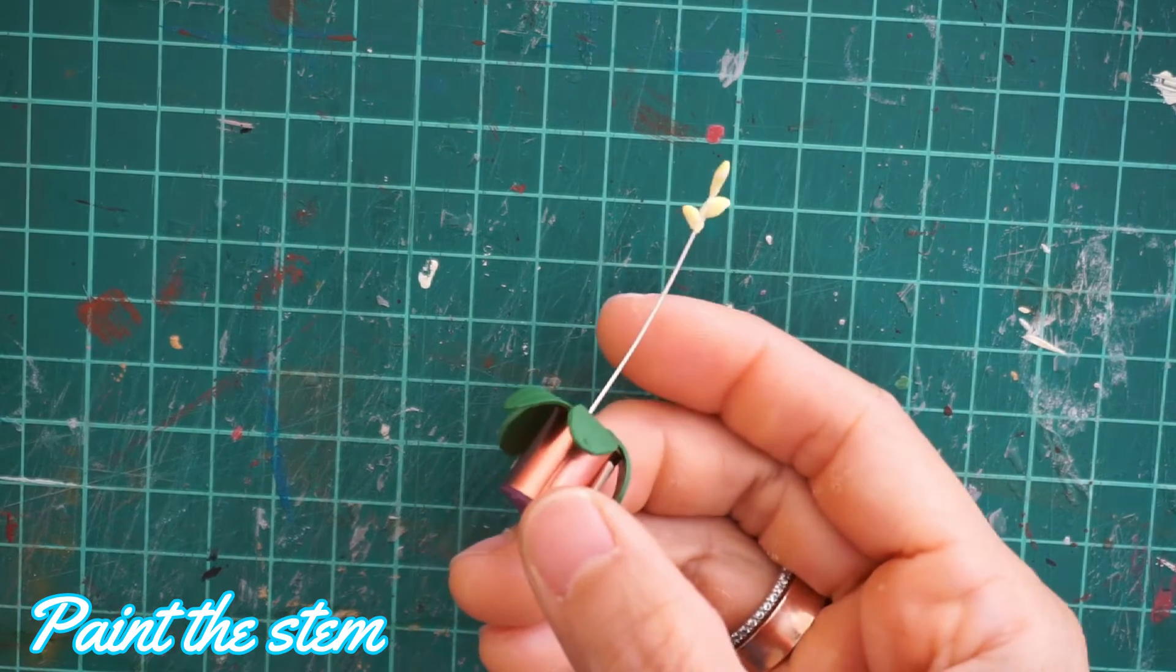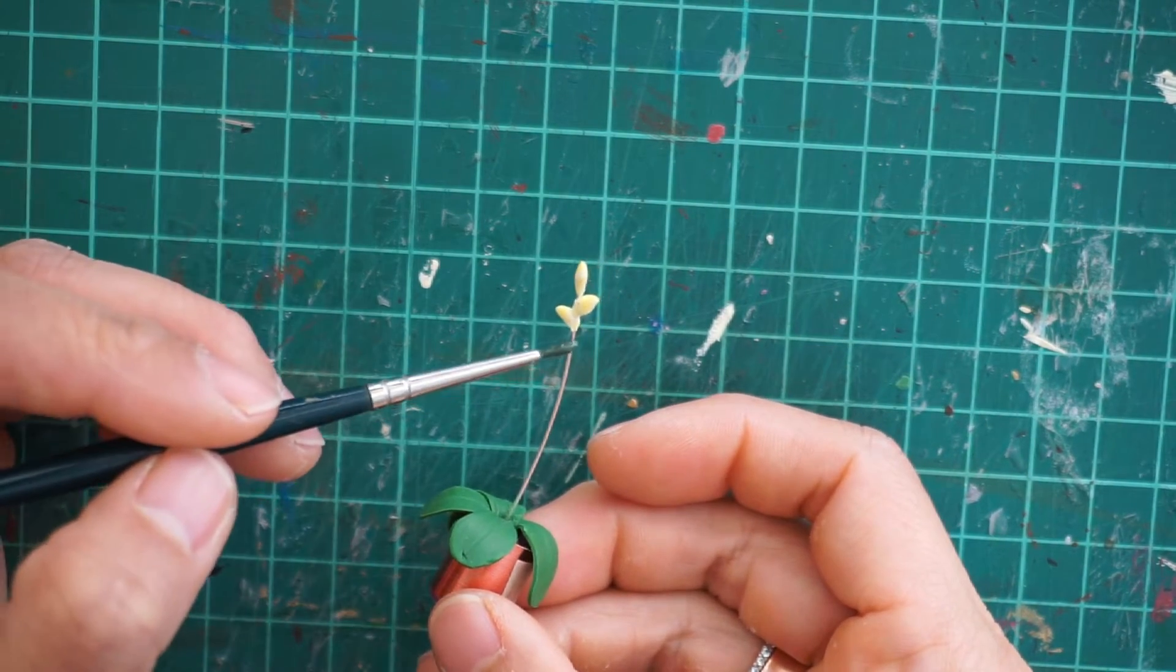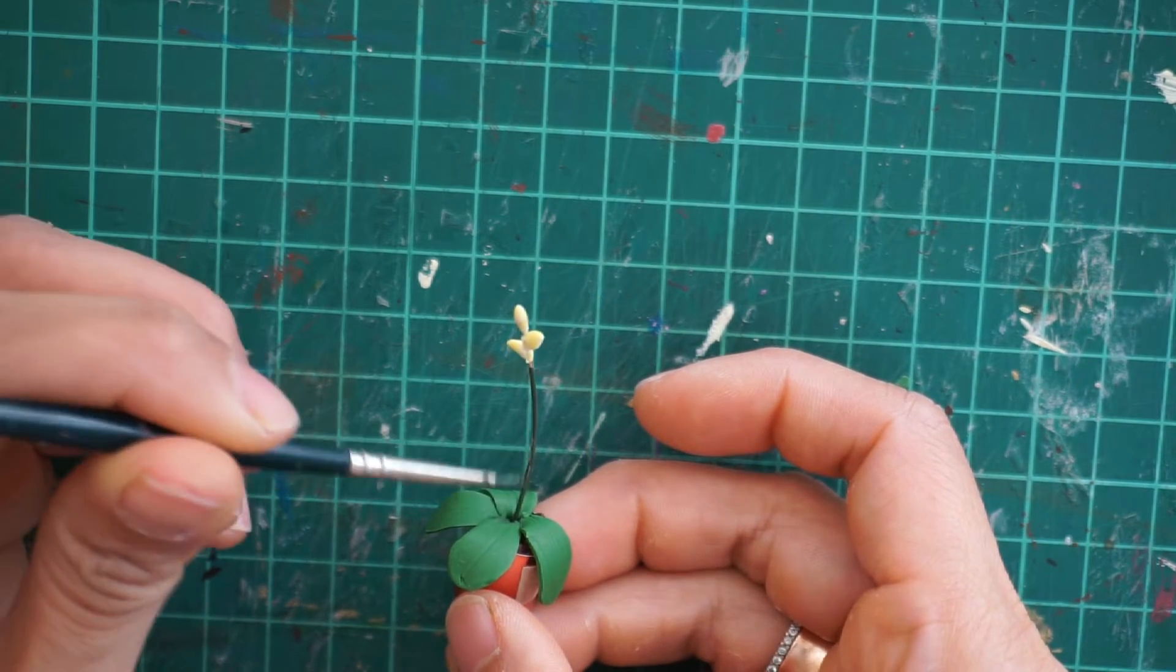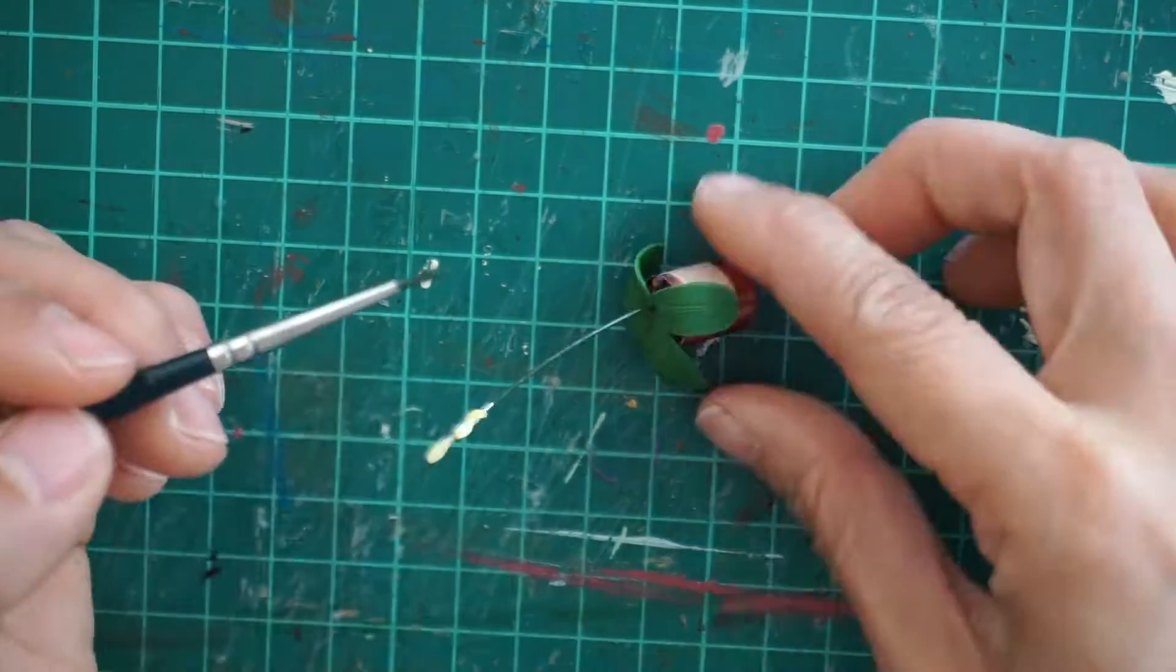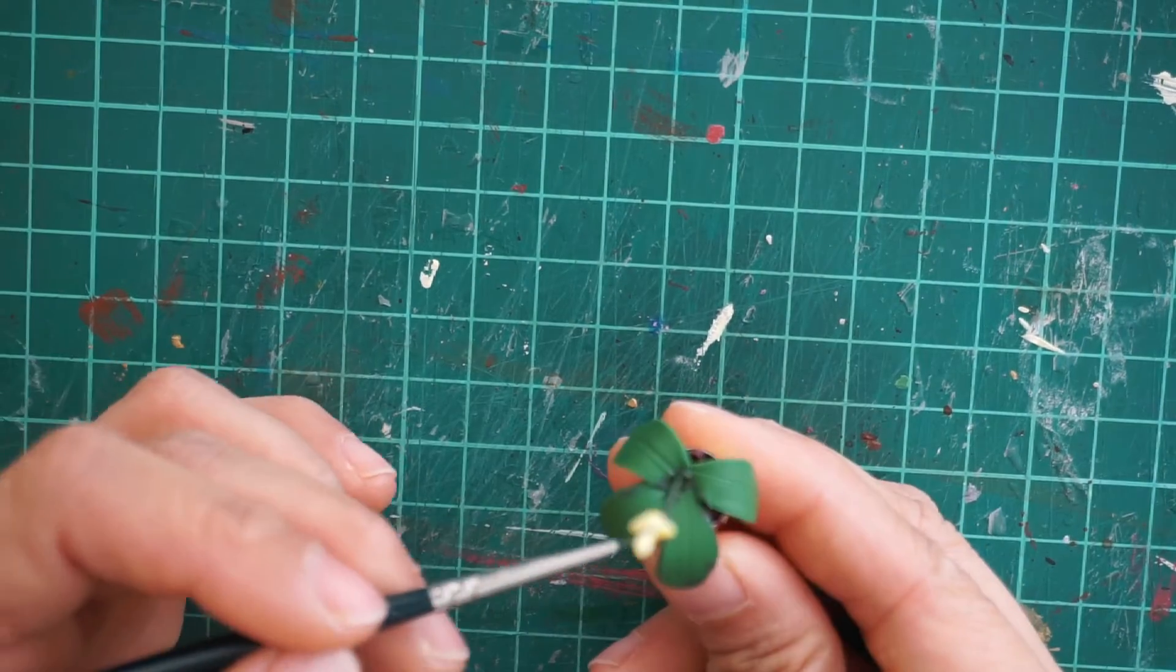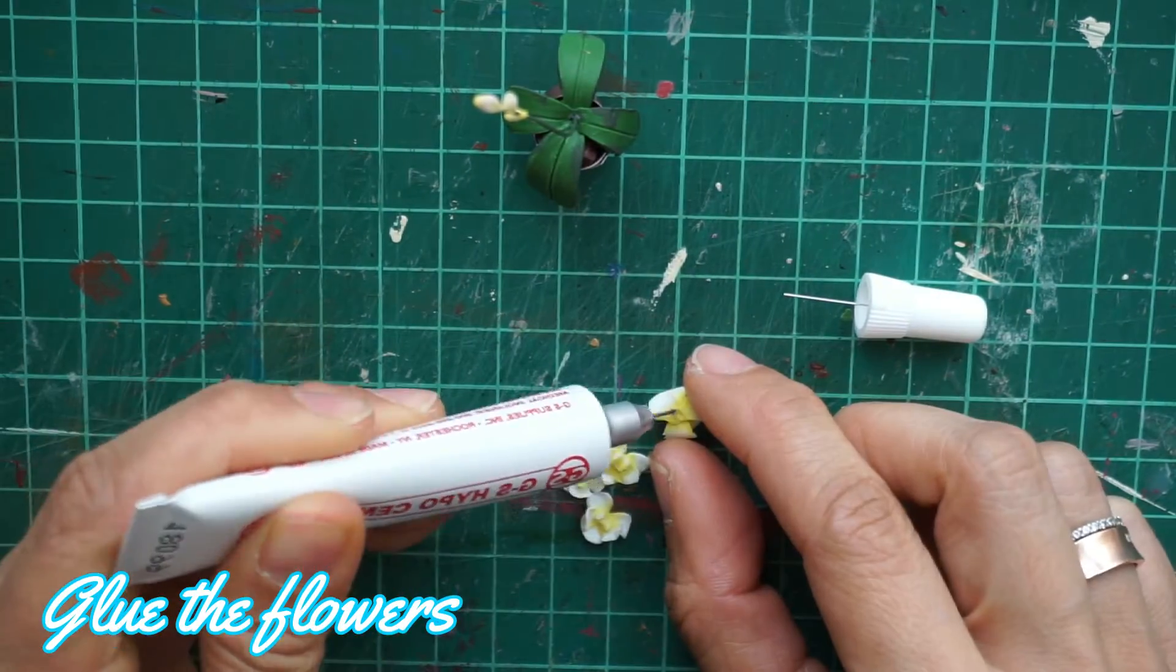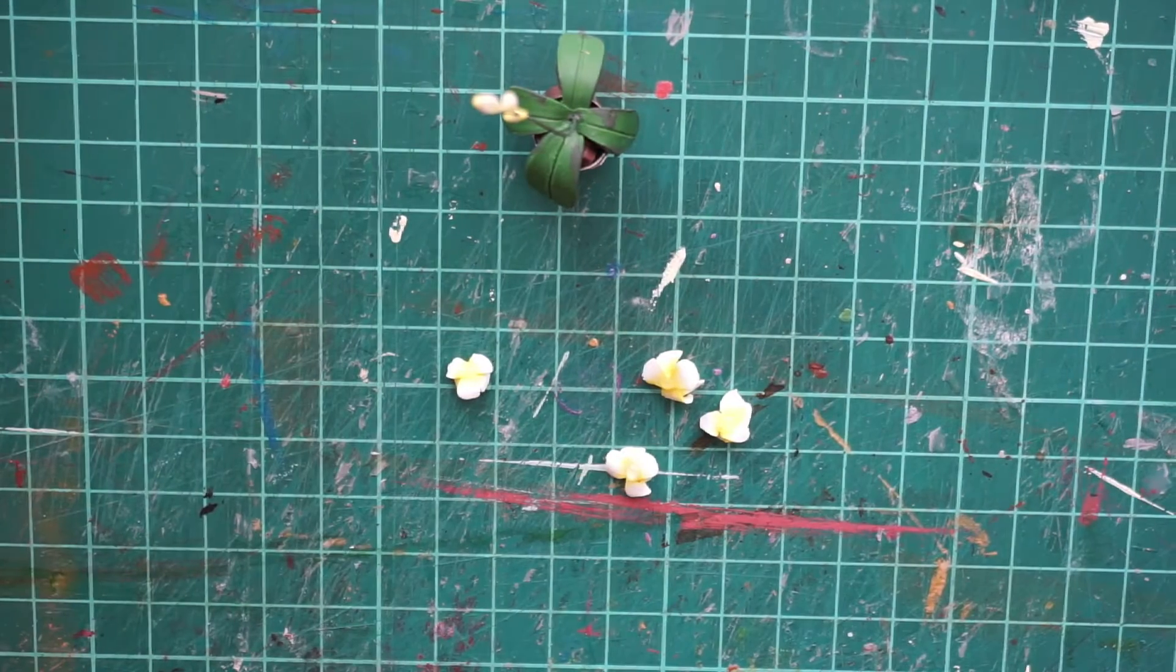This is how the fully cured clay looks like. I painted it using dark green color, painting the stem. Then lastly, I glued the flowers to the stem using hypo cement glue.